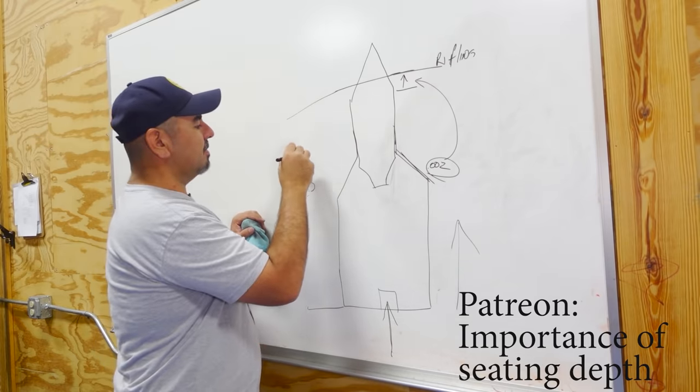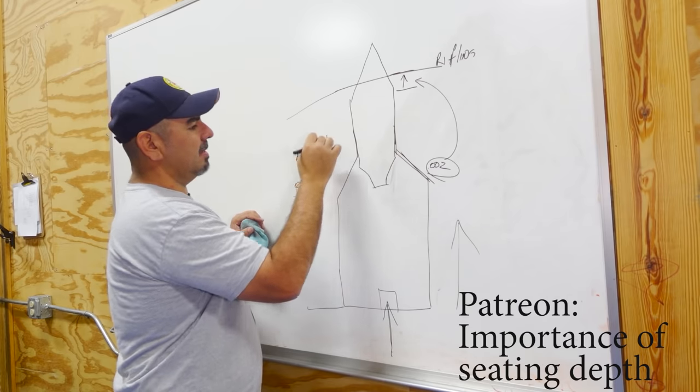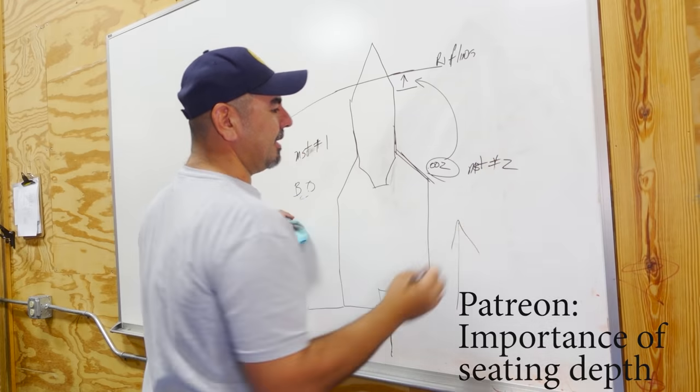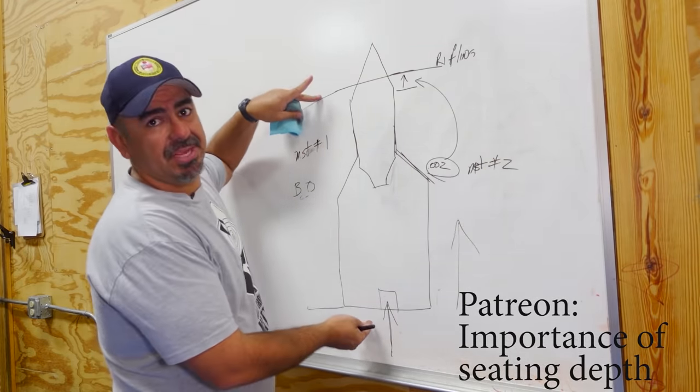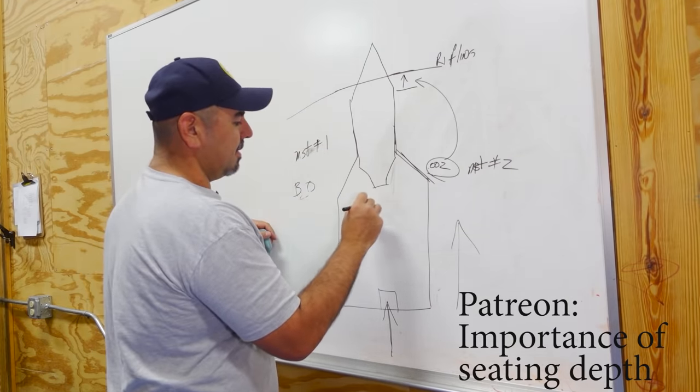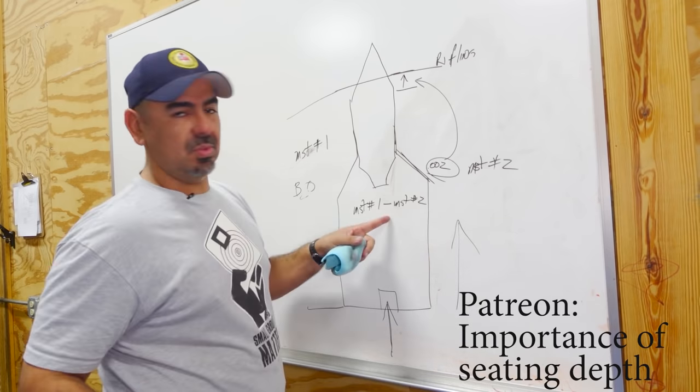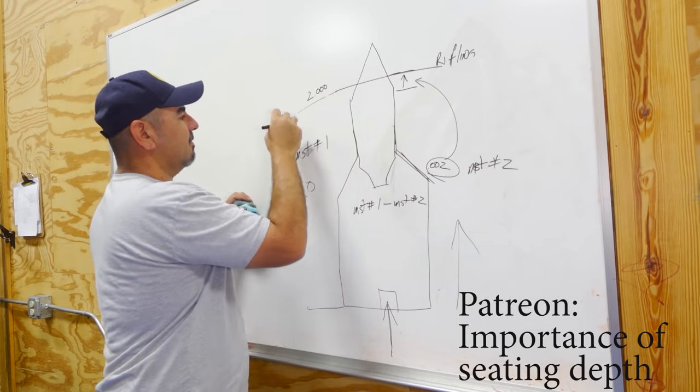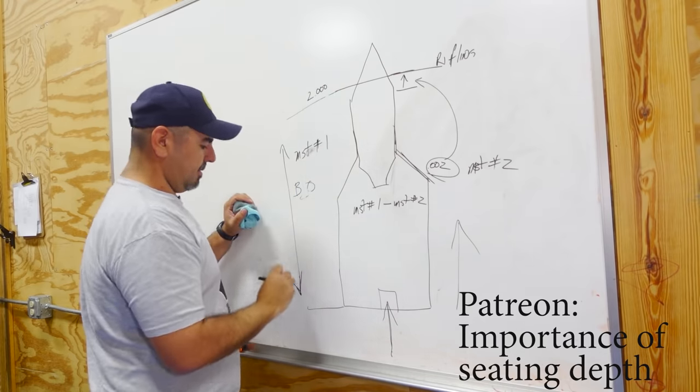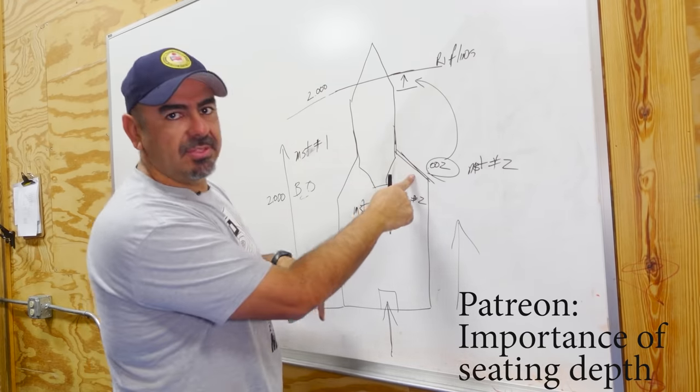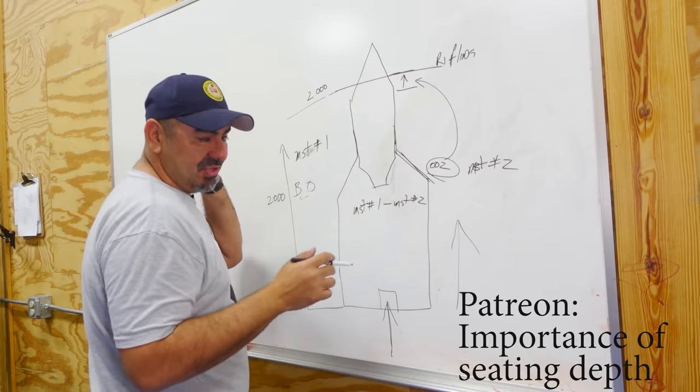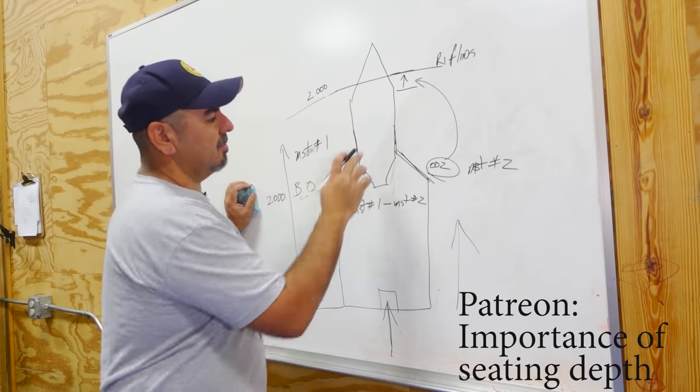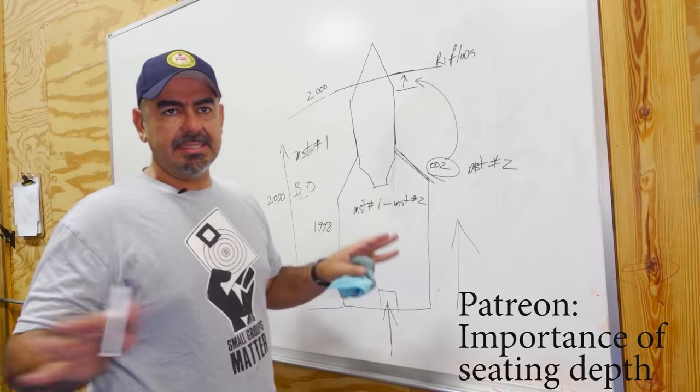Are you with me? So in reality, your base to ogive dimension is this measurement—let's call it measurement number one—and this is measurement number two. In reality, the actual dimension is measurement one minus measurement number two. Let's just say for simplicity this is exactly two inches from here to here, but you have a two thousandths shoulder bump. The actual base to ogive dimension is 1.998 because it shoves your bullet forward two thousandths.